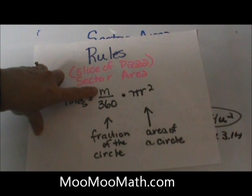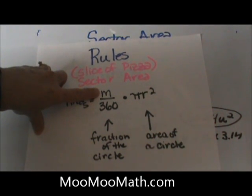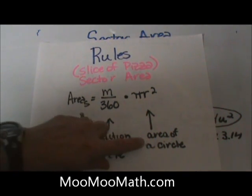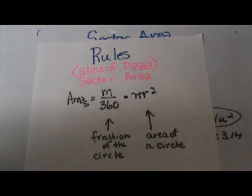And it is the formula, the measure of the central angle over 360 times πr². So the fraction of the circle times the area of the circle gives you sector area. I hope this video was helpful.